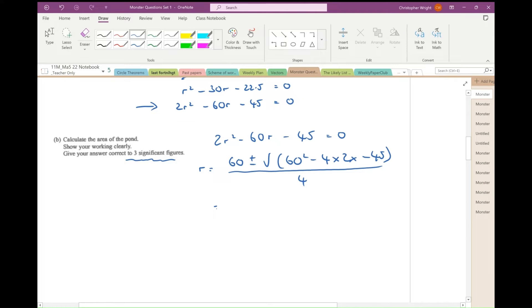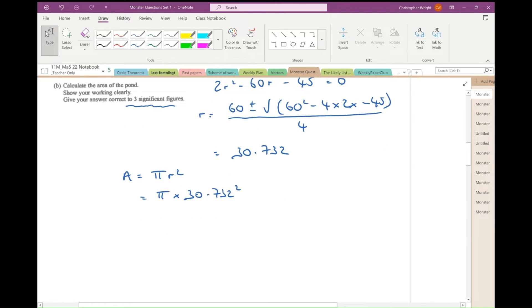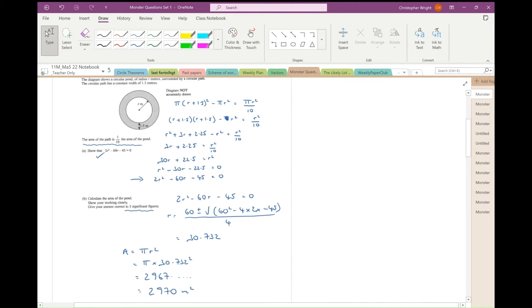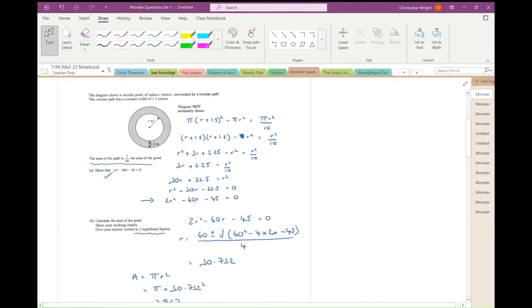If you put that in your calculator, you get one negative answer, which is obviously not feasible, and you get a positive answer for r: 30.732. Now I'm asked to find the area of the pond. That was pi r squared. So that's pi times 30.732 squared. On my calculator, that works out to be 2,967 point something, but to three significant figures, 2,970 square metres. And that is question one done.